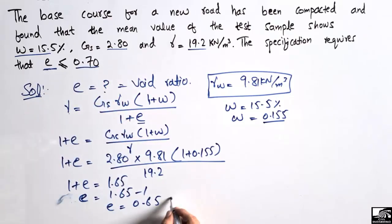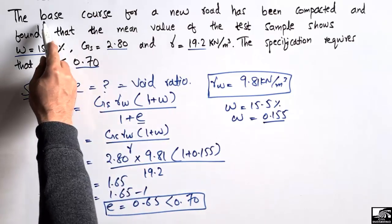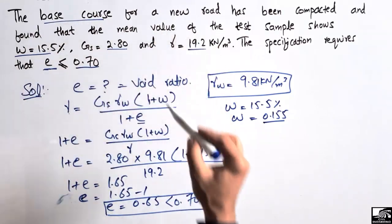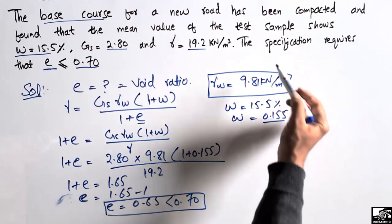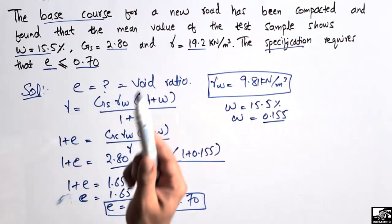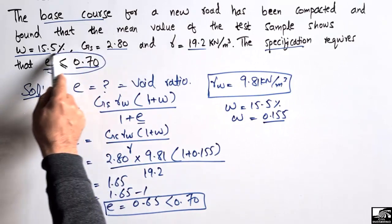So e = 0.65 is less than 0.70. It means that our soil which is used as base course for a new road has been well compacted because it is according to the specification.